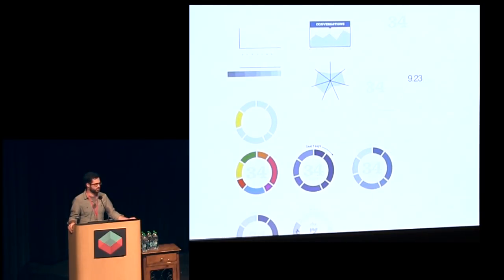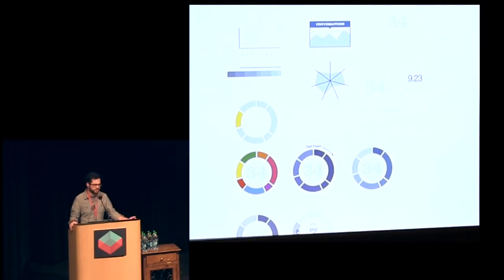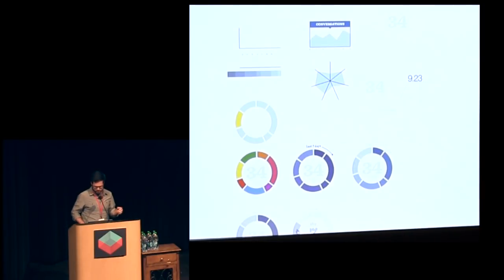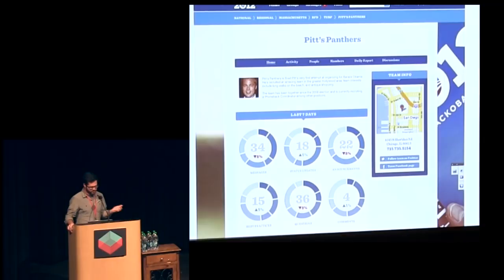Early on, when this was getting going, we wanted some way to show that there's activity on these teams — it's not just a list of teams and states and things. One of our designers, Taylor LaCroix, put together some designs saying: if we just want to show the stuff already happening in Dashboard, like comments and things, let's have a fun little interactive graphic on the team page to show something. So we ended up with this.